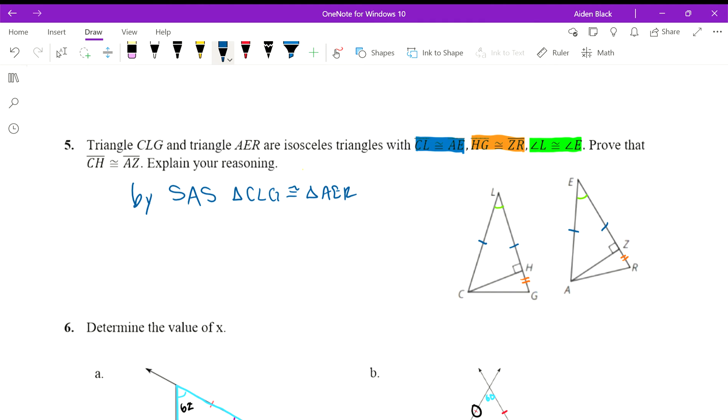We know those triangles are congruent. By CPCTC, corresponding parts of congruent triangles are congruent. I'll use a different color here, pink.